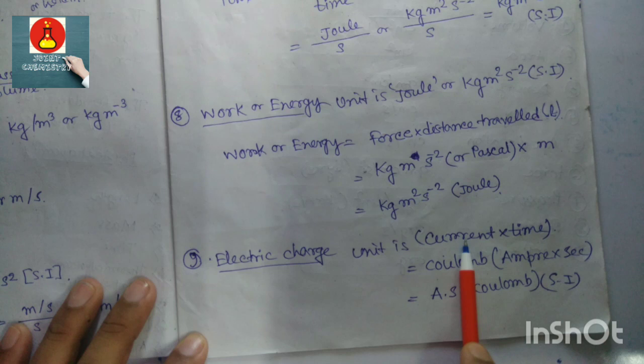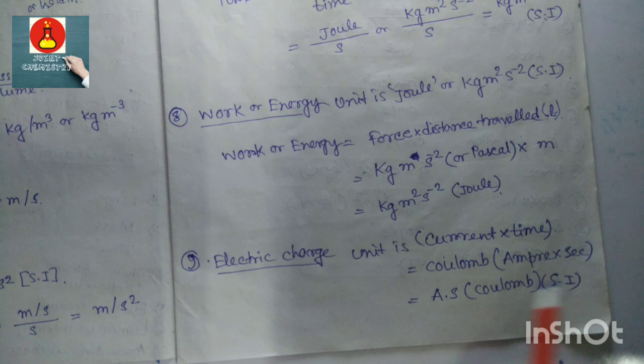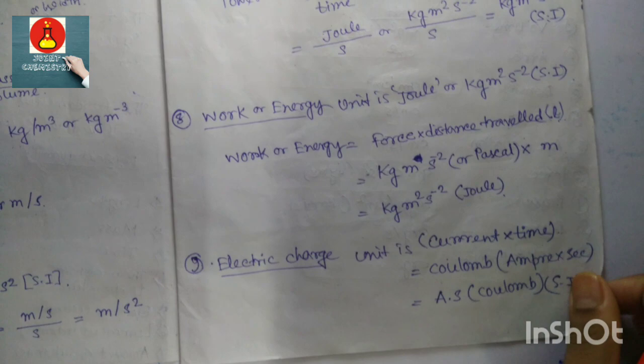Electric charge: the unit is current times time, or coulomb, also known as ampere-second. Both ampere-second and coulomb are the same — this is the SI unit.